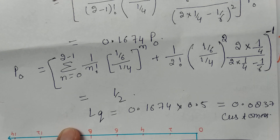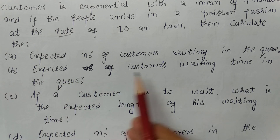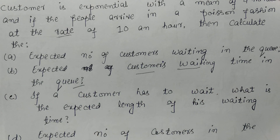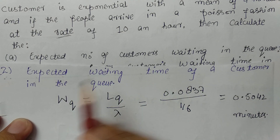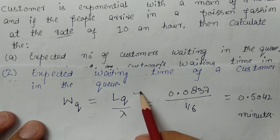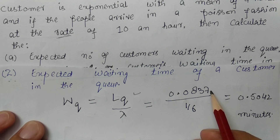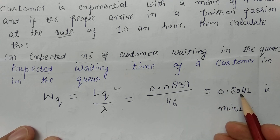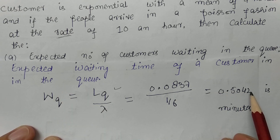Next, we calculate the expected waiting time of a customer in the queue. We divide Lq by λ: Wq equals 0.0837 divided by (1/6), which after simplifying gives 0.5042 minutes. That is, a customer will wait approximately 0.5042 minutes in the queue.